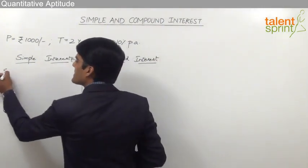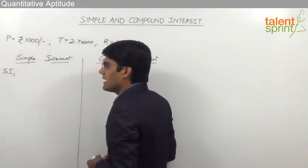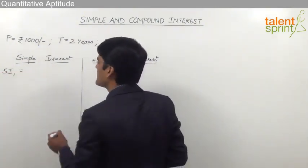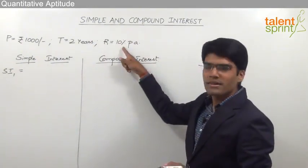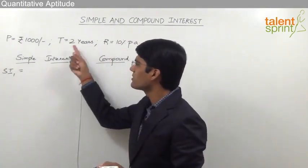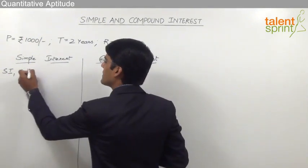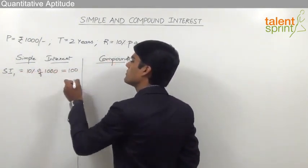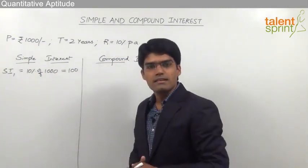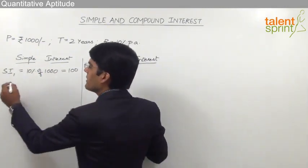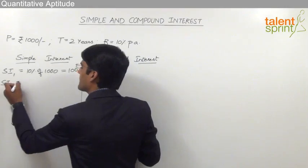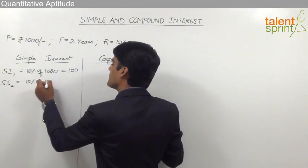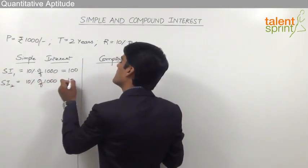The simple interest for the first year (SI₁) is 10% of 1000 rupees, which equals 100 rupees. For the second year, simple interest is again 10% of the principal amount, which is again equal to 100 rupees. In simple interest, the principal remains the same each year, so the yearly interest remains constant at 100 rupees.